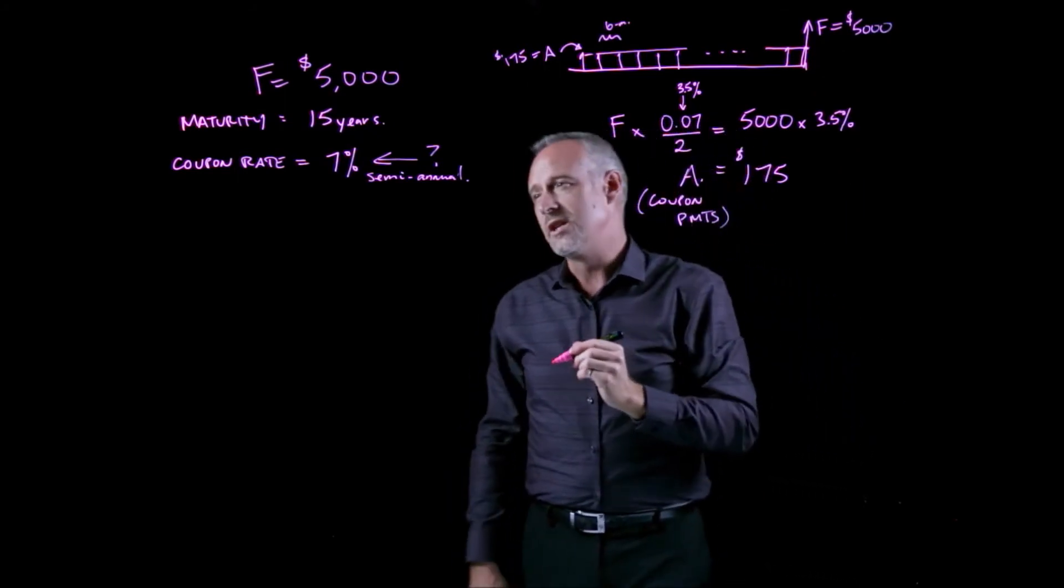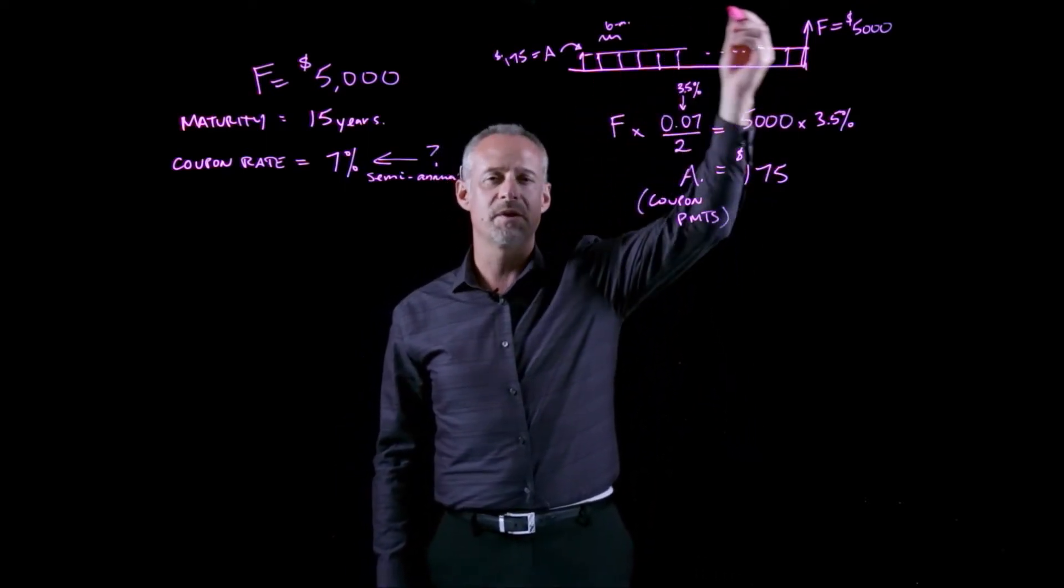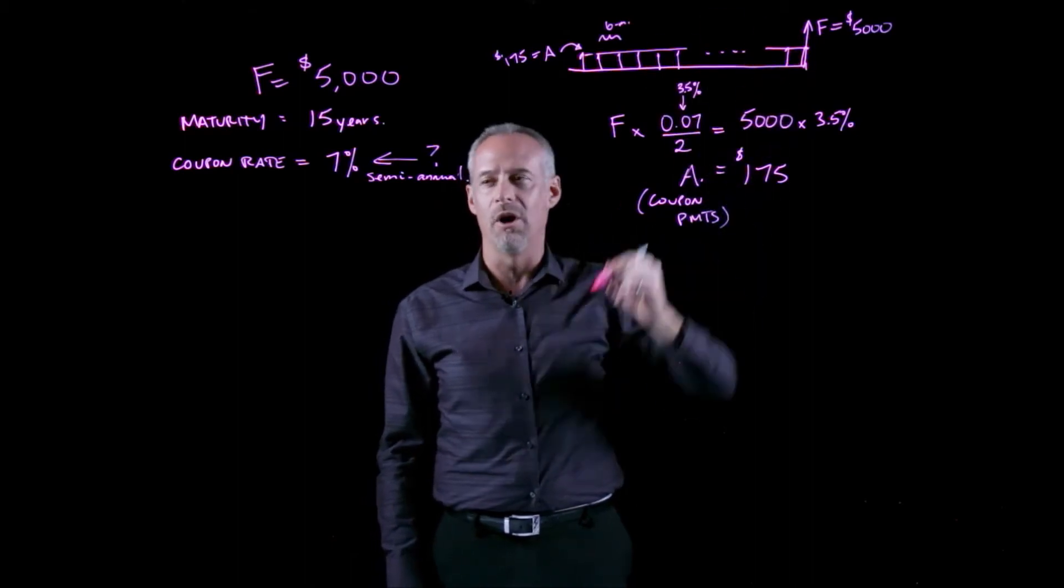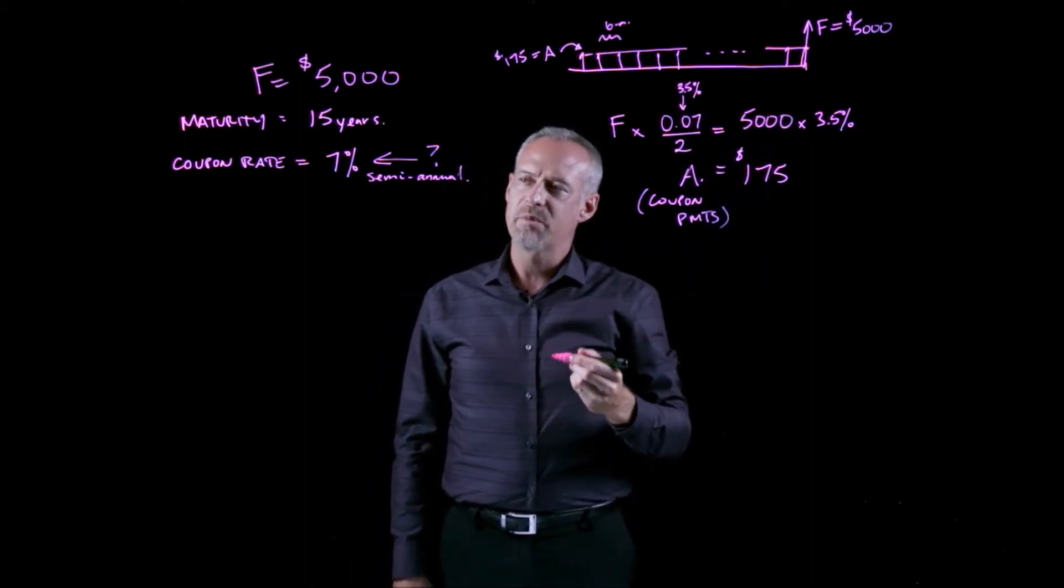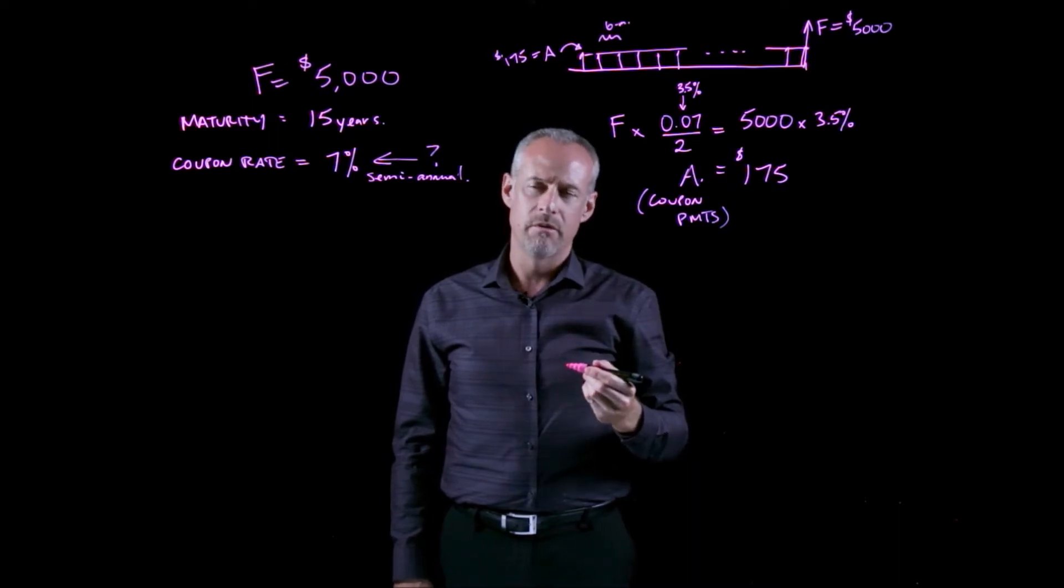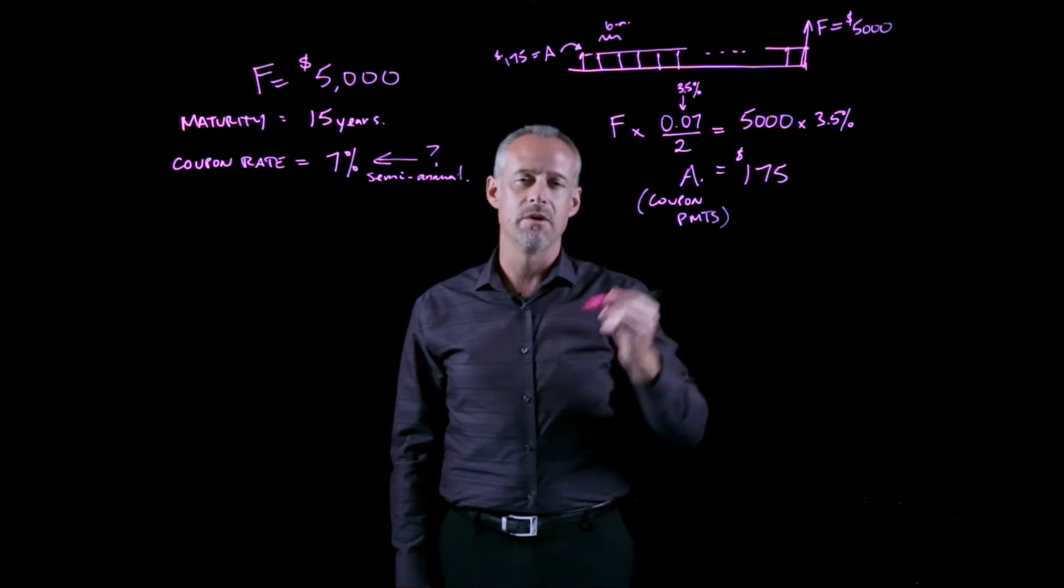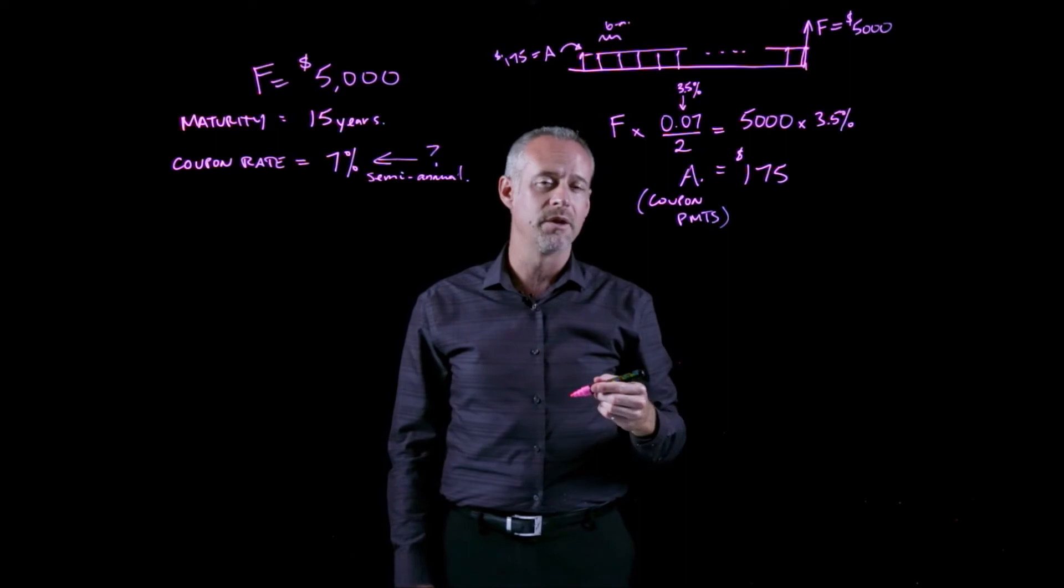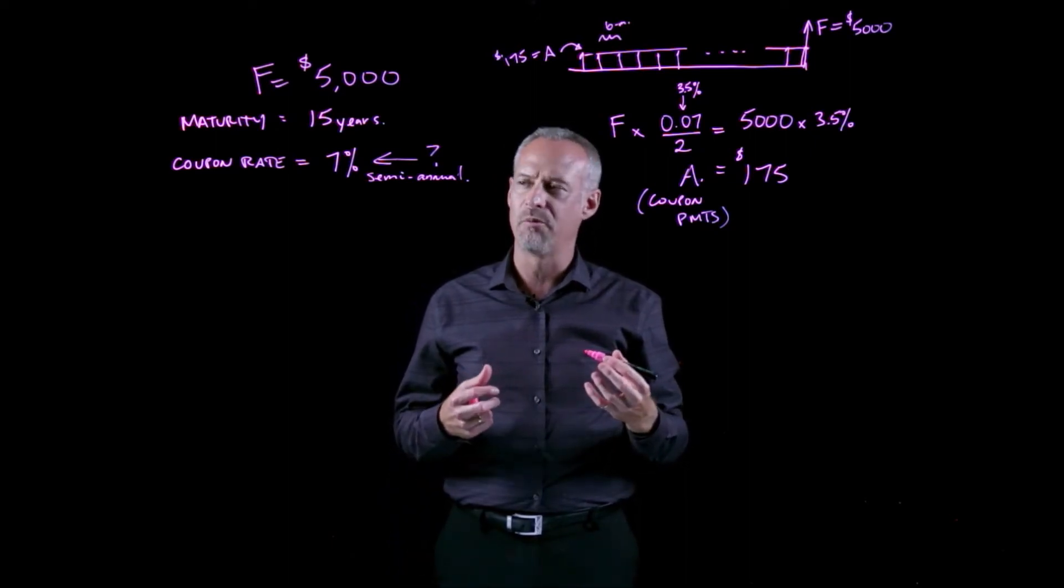The other thing we need to know in order to figure out how much I'm willing to pay for this cash flow diagram called a bond is how much would I expect to earn on similar risk investments to this particular bond. This may be a government bond or a company bond, but if I can identify something that is of similar risk, that will define the rate of return that I expect to earn from this bond.